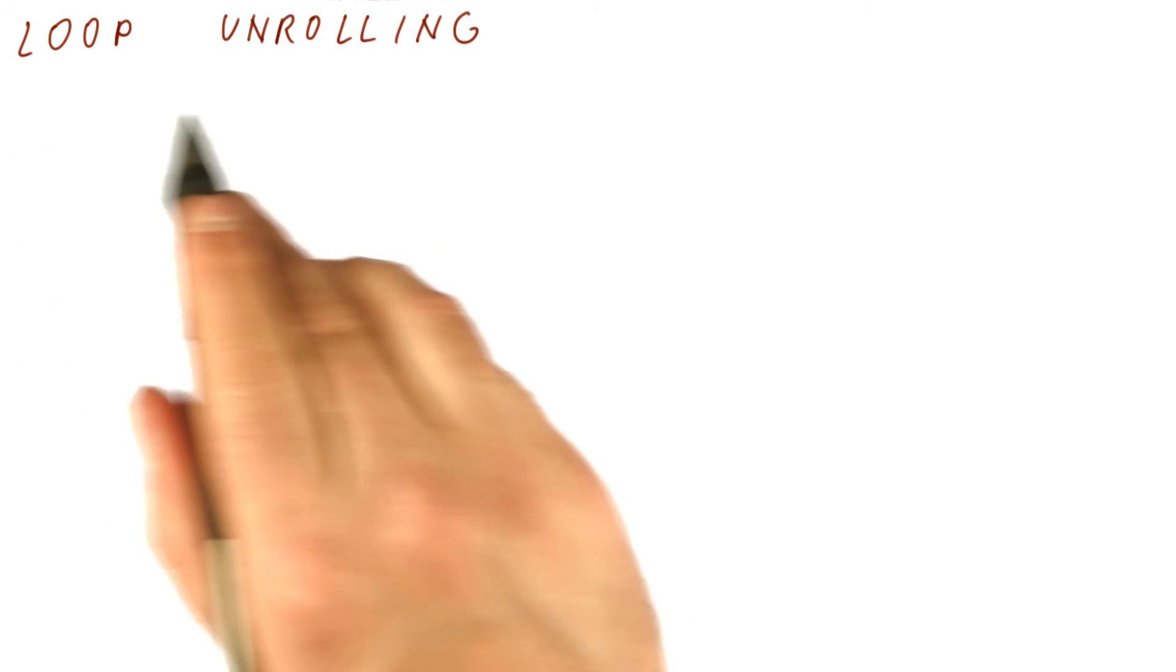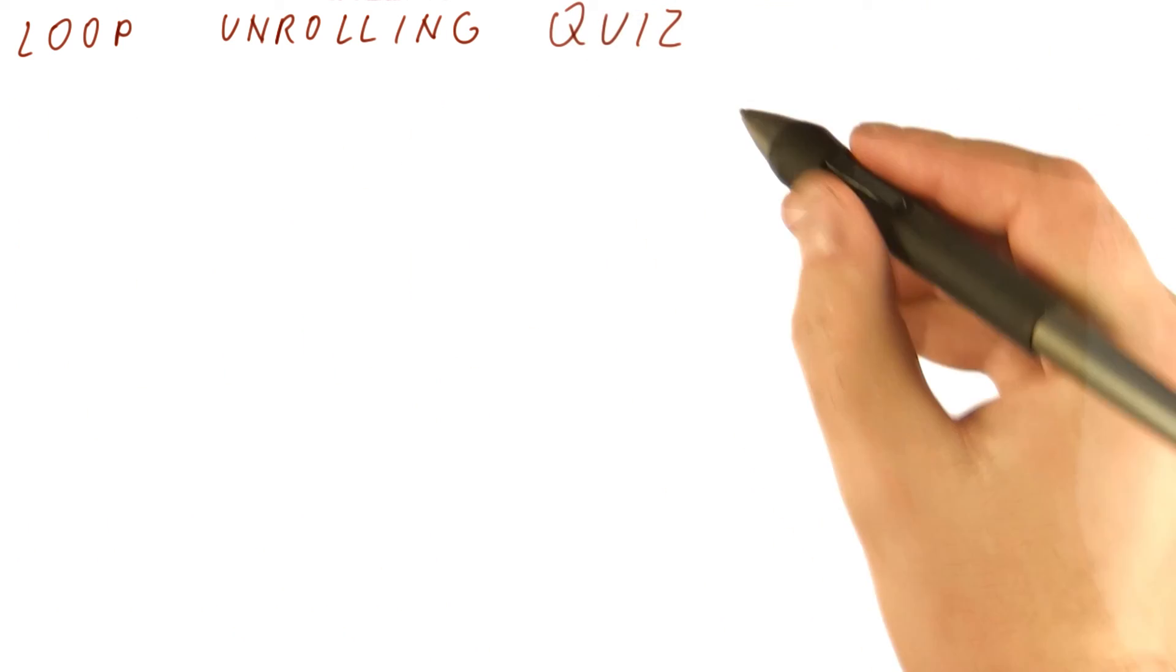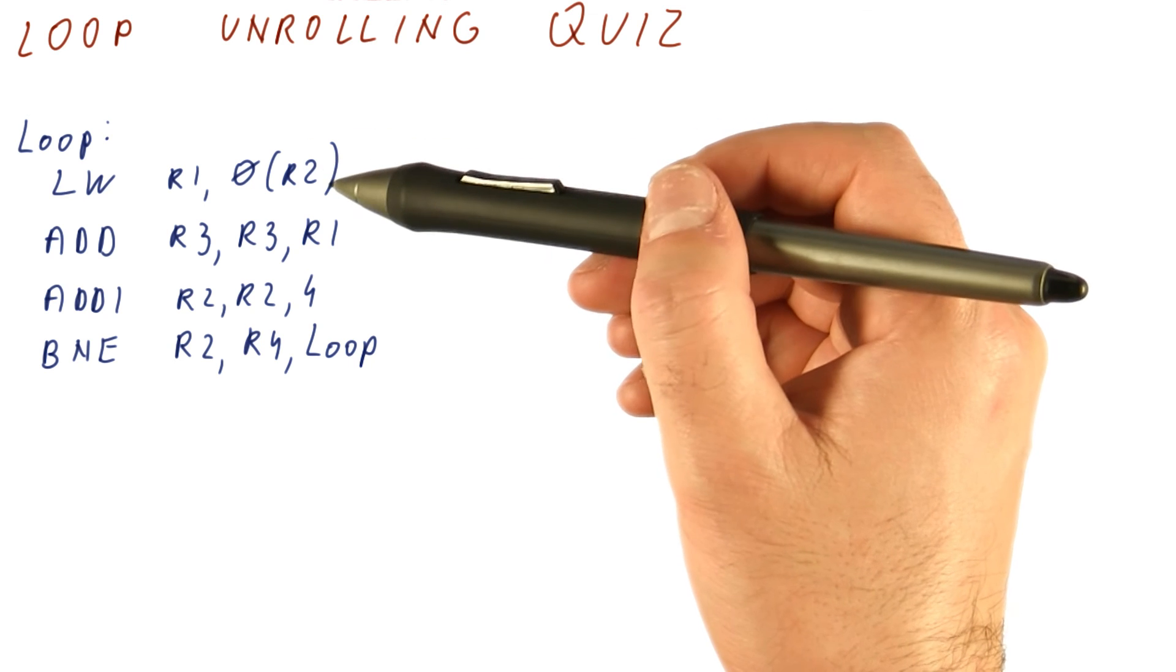So now that we have seen an example of loop unrolling, let's do a loop unrolling quiz. Let's say we have the following loop.